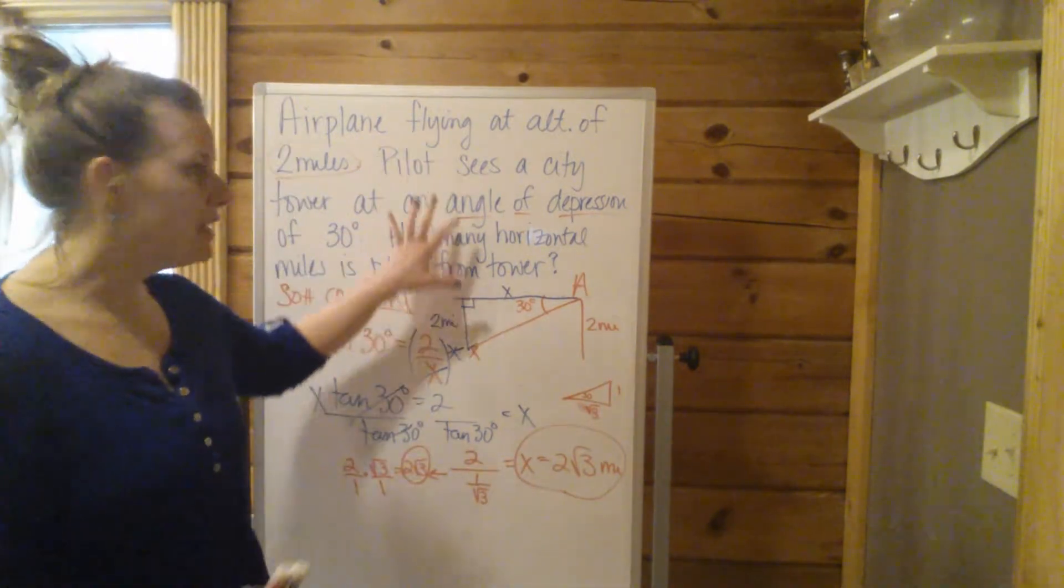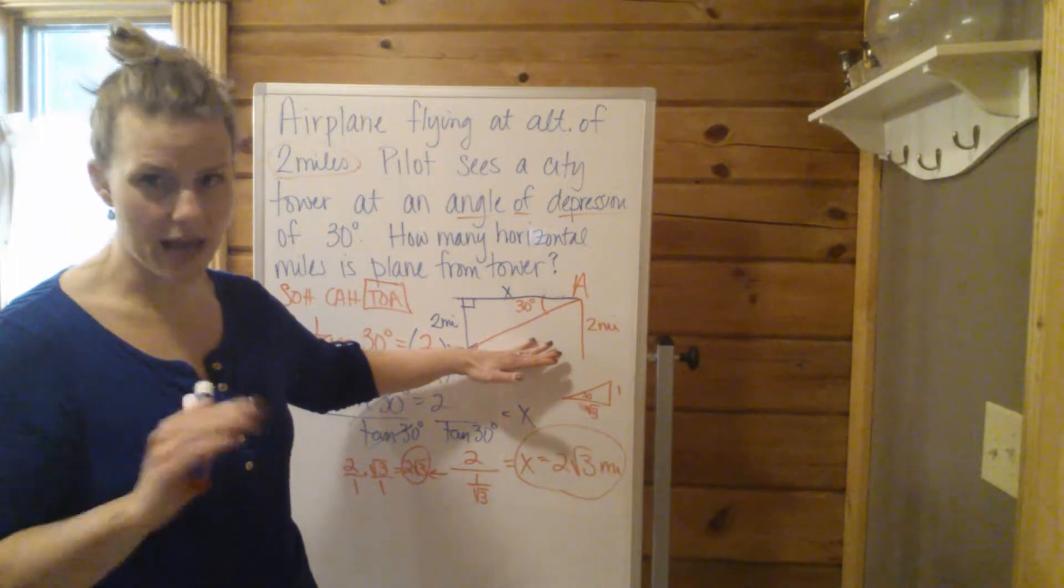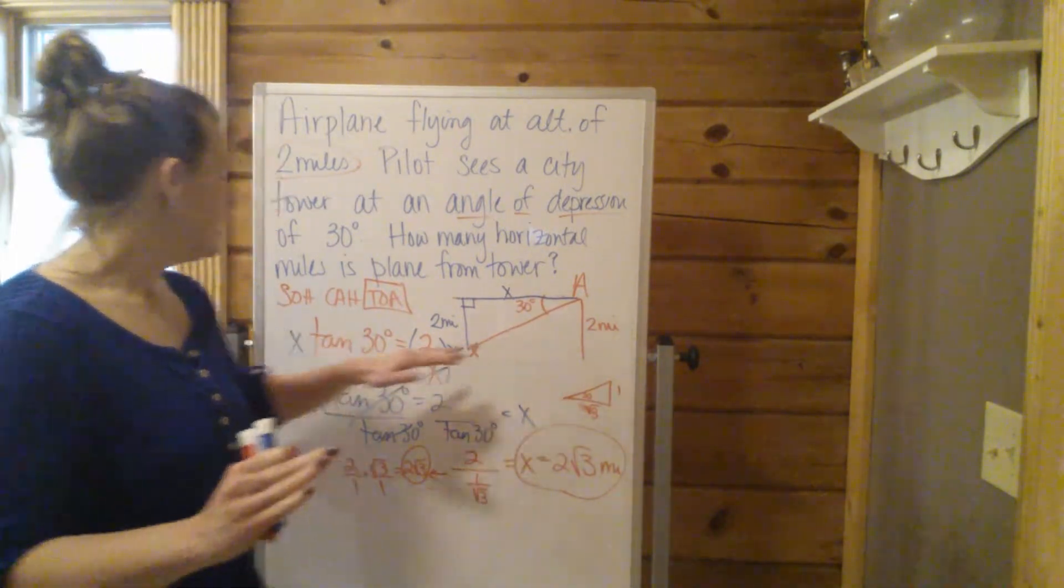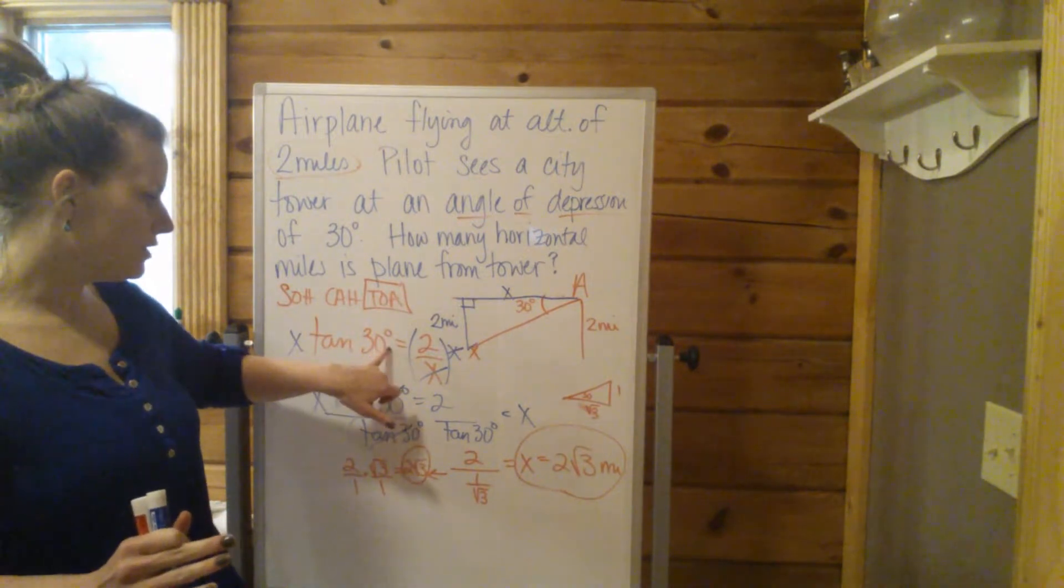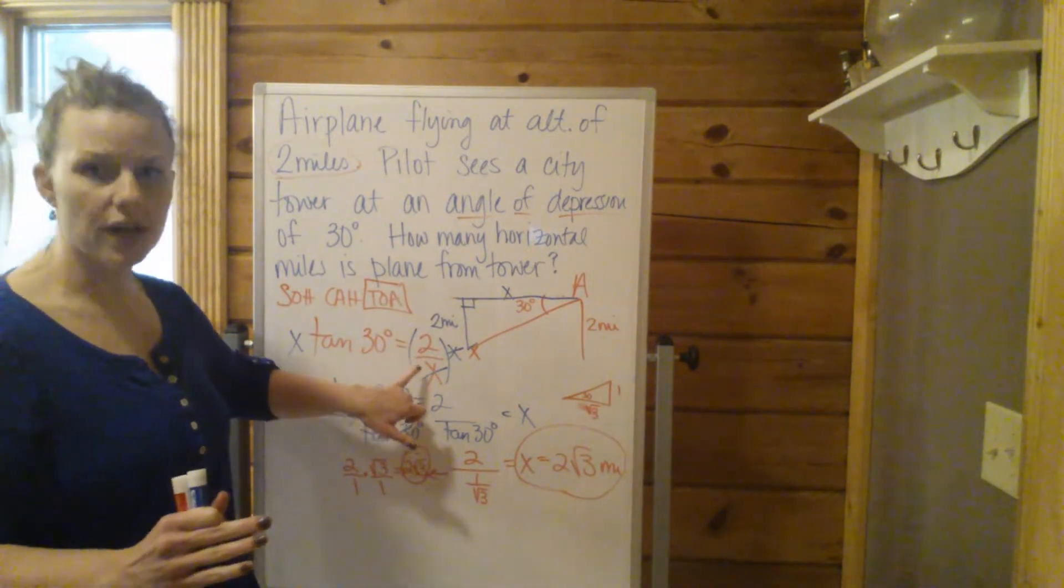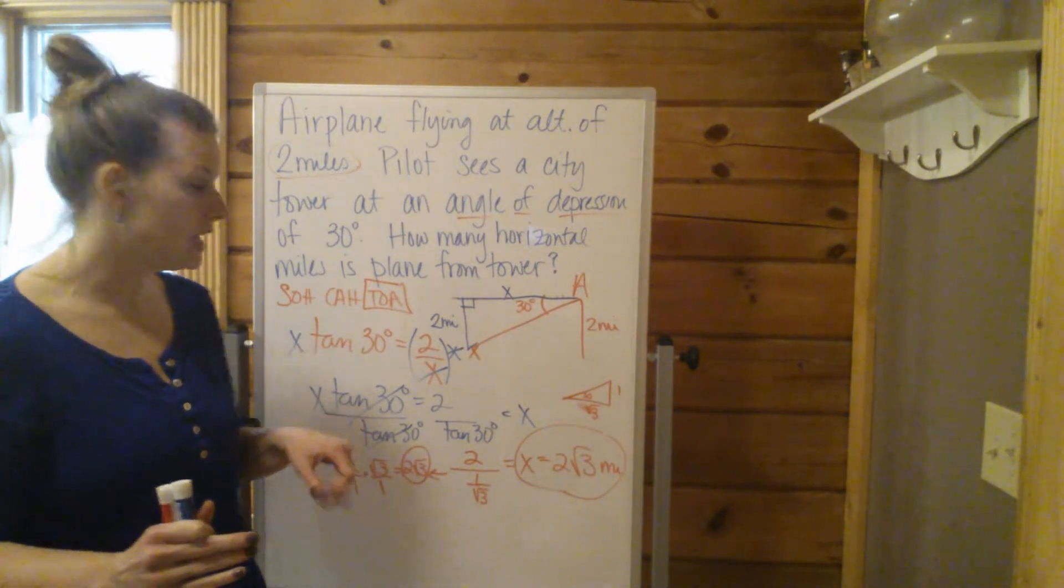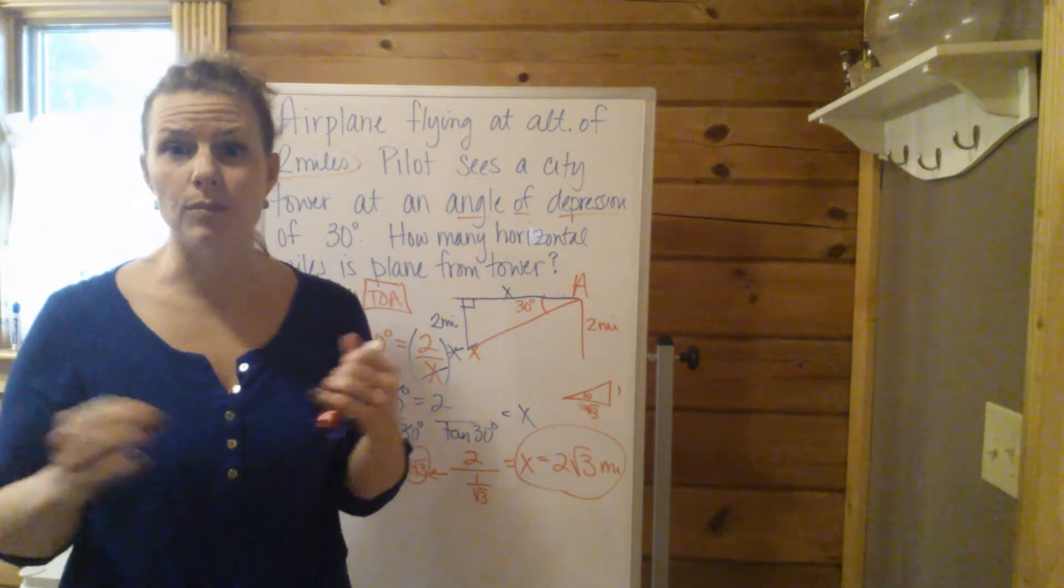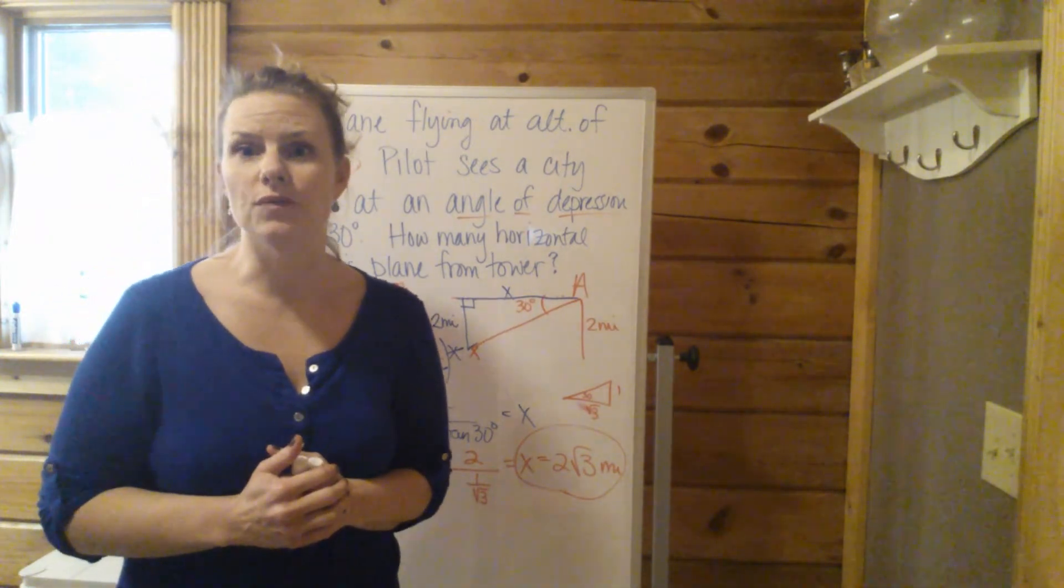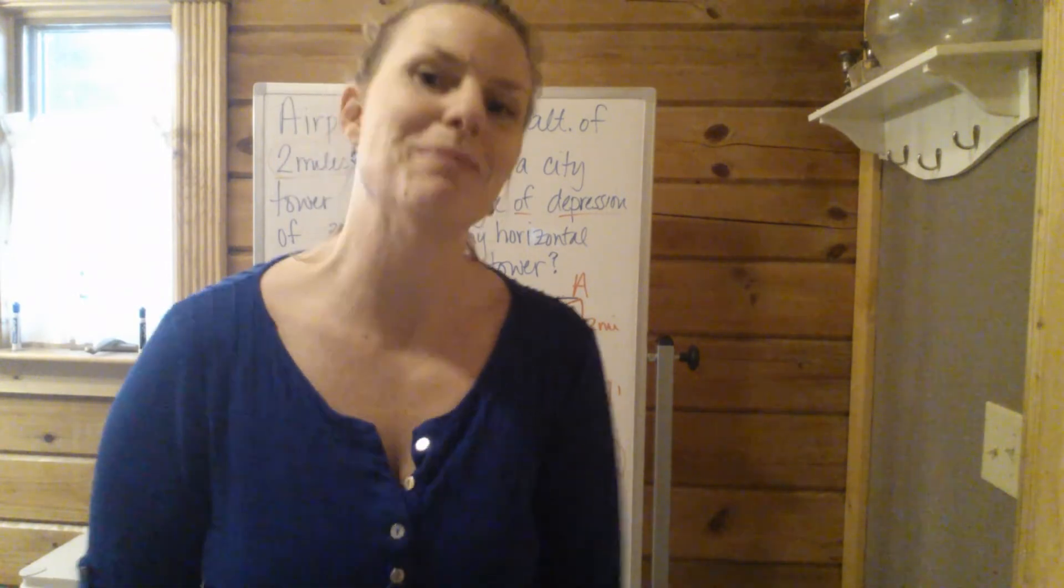So again, decoding the words, setting up the correct right triangle, half the battle right there, set up your trig equation. So in this case, it was tangent of 30 degrees equals 2 over X using our TOA relationship with tangent. And then from there, you're just solving for X and using your calculator appropriately and correctly. So hopefully that helps with another trig story problem. Thanks.